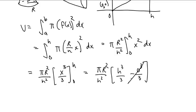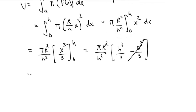And let's see. We have pi r squared h cubed over 3h squared. We cancel out two of our h's.